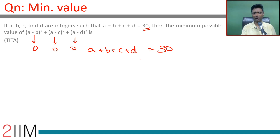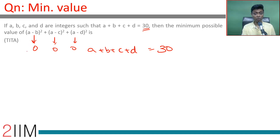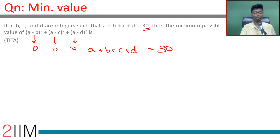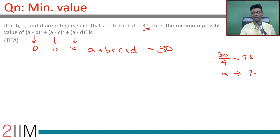Whenever there is a difference, it is going to be an integer. When you square an integer, the larger the difference, the larger the square. So we should find A to be as close to B, C, and D as possible, with all four numbers close to each other. 30 divided by 4 is 7.5, so we should peg all values at 7 or 8. Two 7s and two 8s will work.